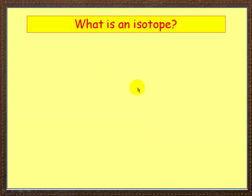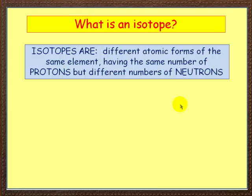So what's this thing called an isotope? Isotopes shouldn't confuse us if we just remember this basic definition: isotopes are different atomic forms of the same element. They've got the same number of protons and also electrons — all that differs is the number of neutrons they've got.